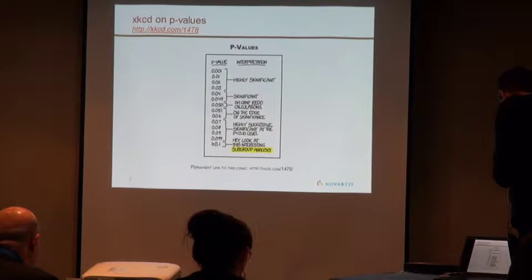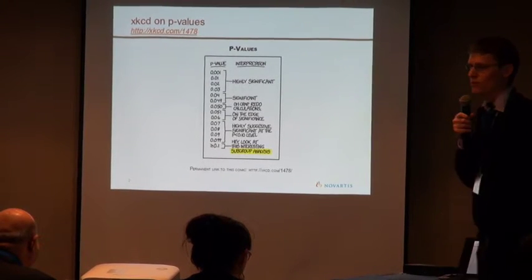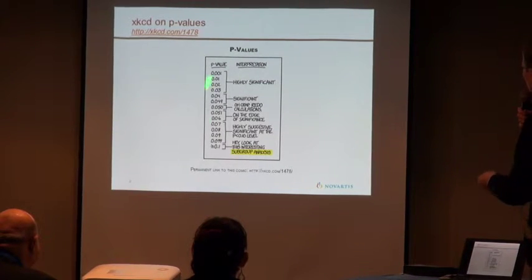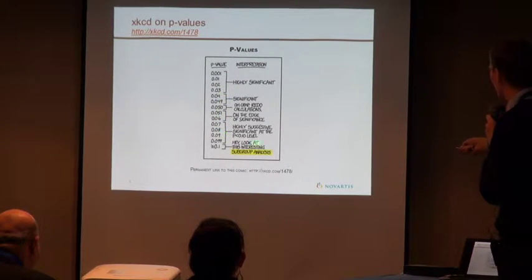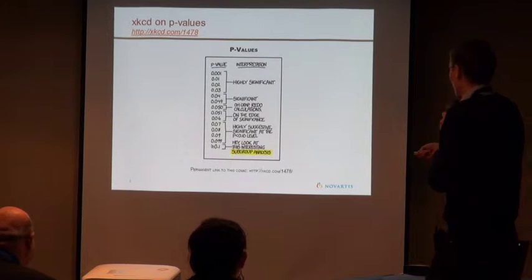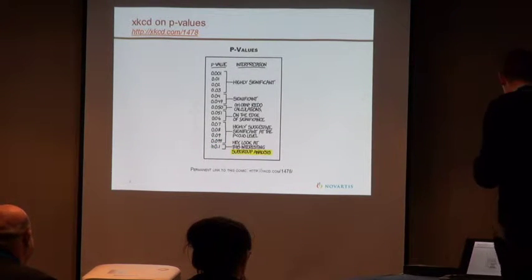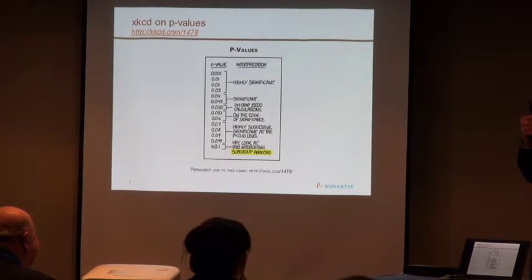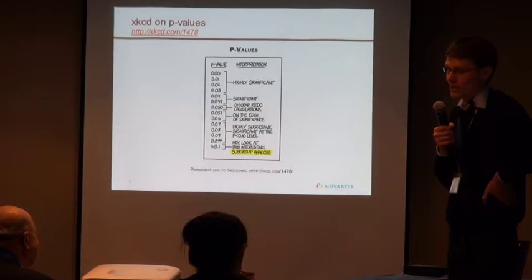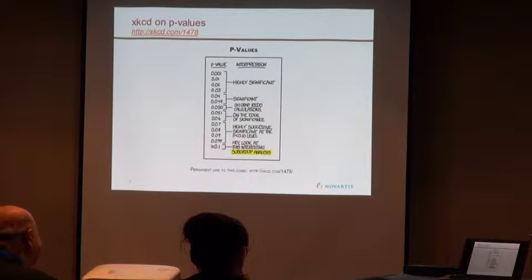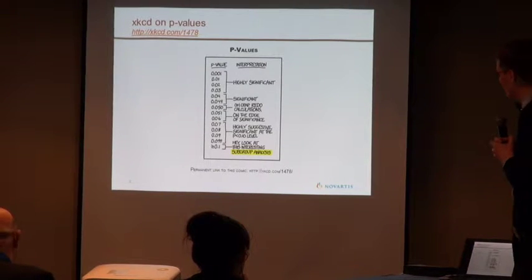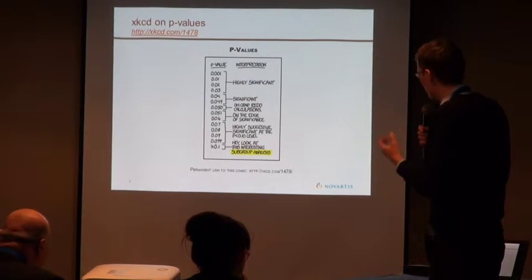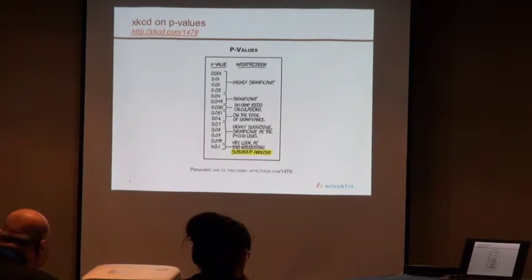To start with something light-hearted — it's from XKCD. On the left-hand side you can see p-values: highly significant p-value, and then at some point it goes higher and higher, and the last resort is essentially, if it's larger than 0.1, 'hey, look at this interesting subgroup analysis.' Of course if you're a statistician you find that funny — but why is it funny? I think it's funny because it's actually describing the truth pretty well.